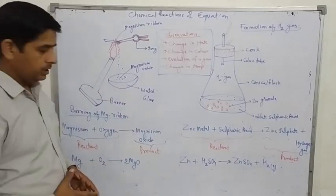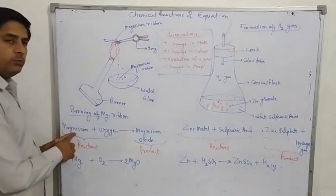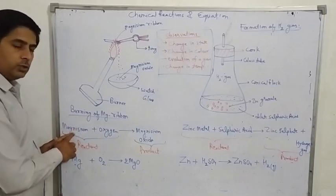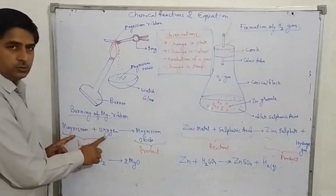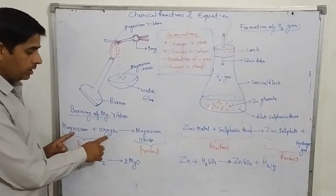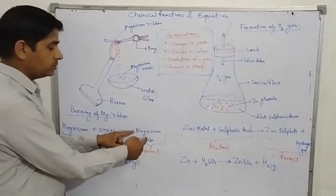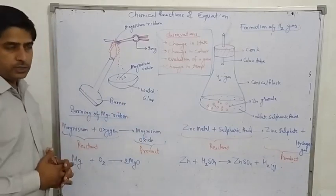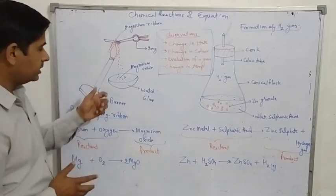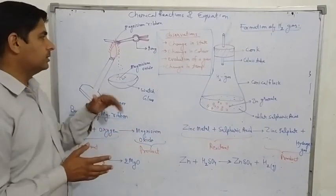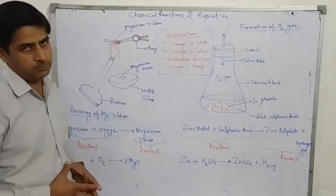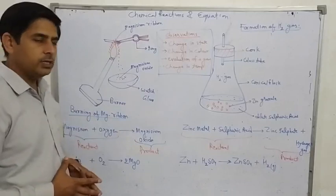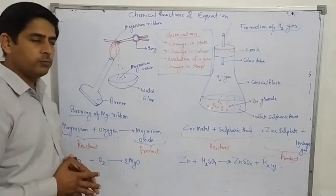If you look at the chemical composition, it is totally changed. Magnesium burns in the presence of oxygen to form magnesium oxide. The colour of magnesium oxide is completely changed compared to the magnesium ribbon. The physical state has also changed — it was solid and it was converted to a powder form.